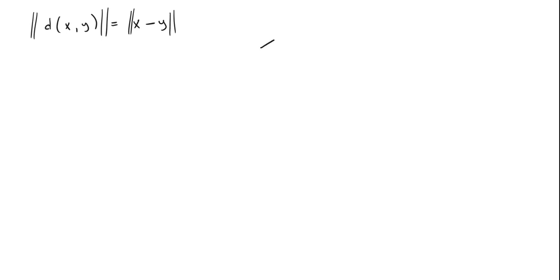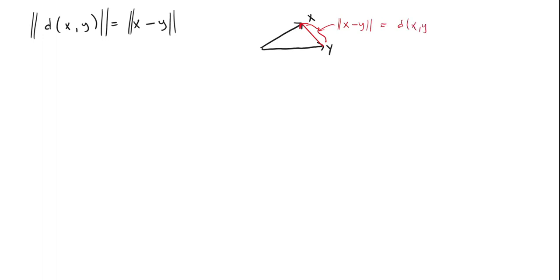If we have x here and y here and we calculate the distance vector x minus y, this gives us a vector pointing from y to x. The length of this vector is the distance between x and y, and that is what we want to calculate.